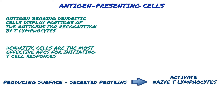Specialized cells that display antigens to T cells and provide additional activating signals are sometimes called professional APCs. The prototypic professional APCs are dendritic cells, but macrophages, B cells, and a few other cell types may serve the same function in various immune responses.